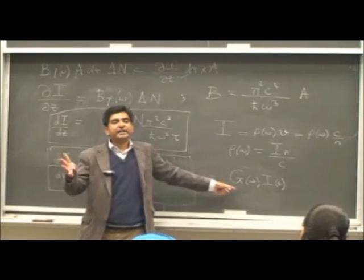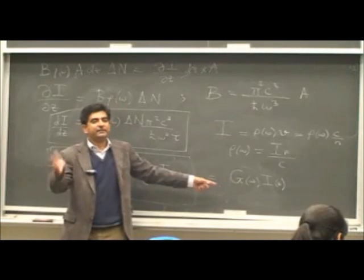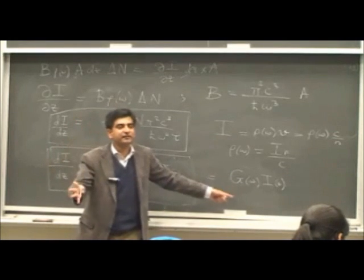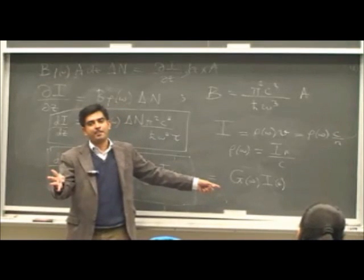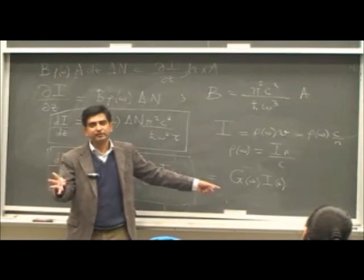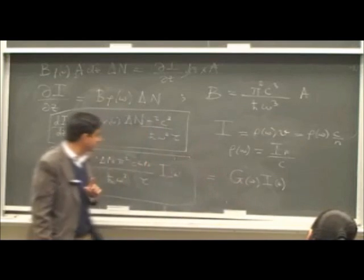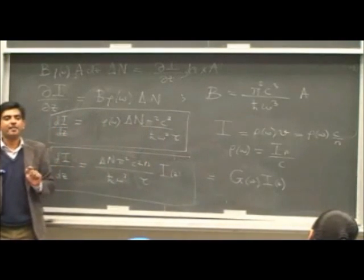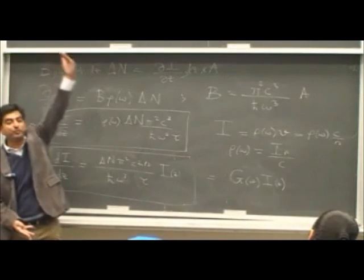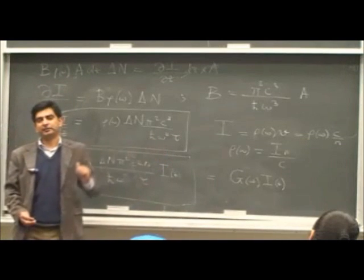If this is positive, amplification occurs. G, as you can see, depends upon the population difference. Higher the population inversion, higher will be the gain.